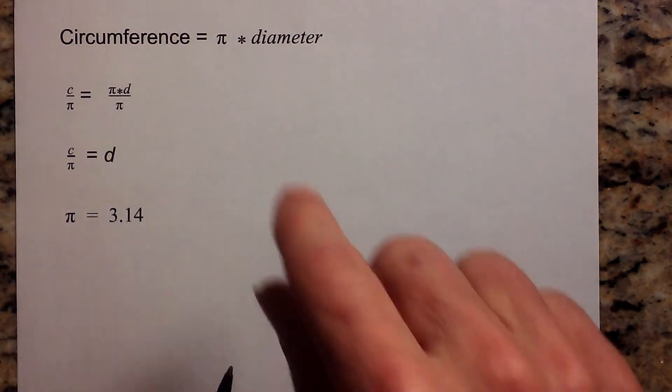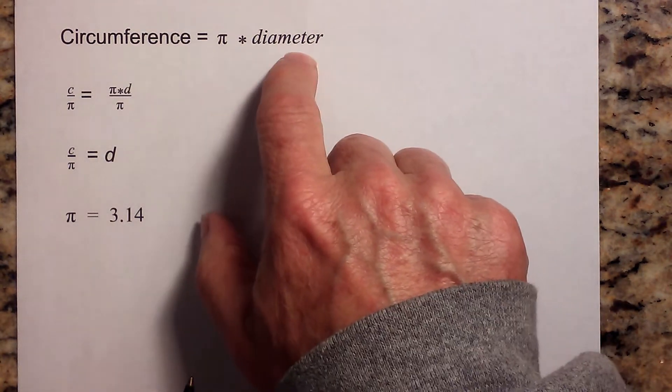So you can actually use the circumference. So let's look at this formula and see how we can use the circumference equals pi times diameter in order to find the diameter when you're given the circumference.